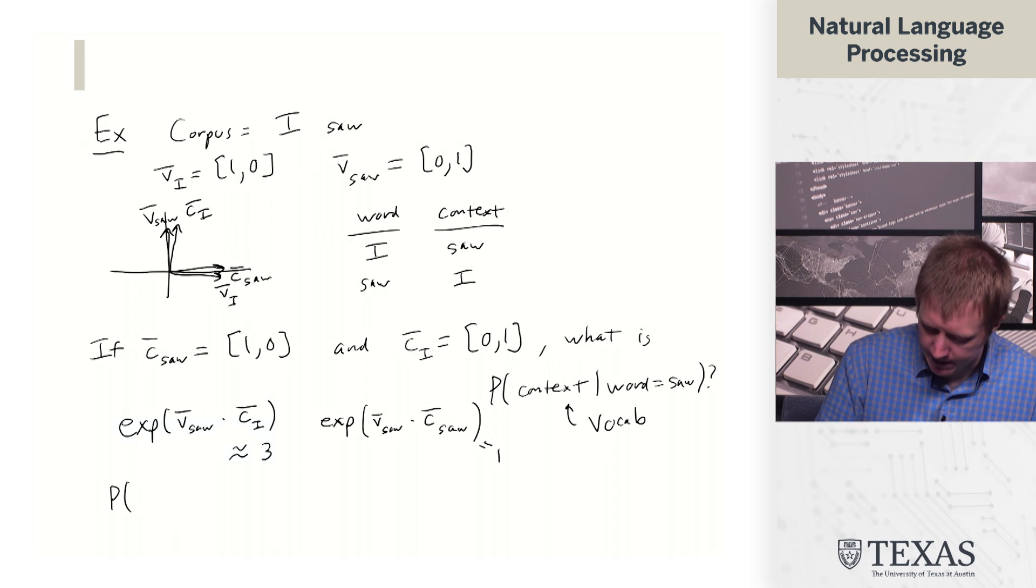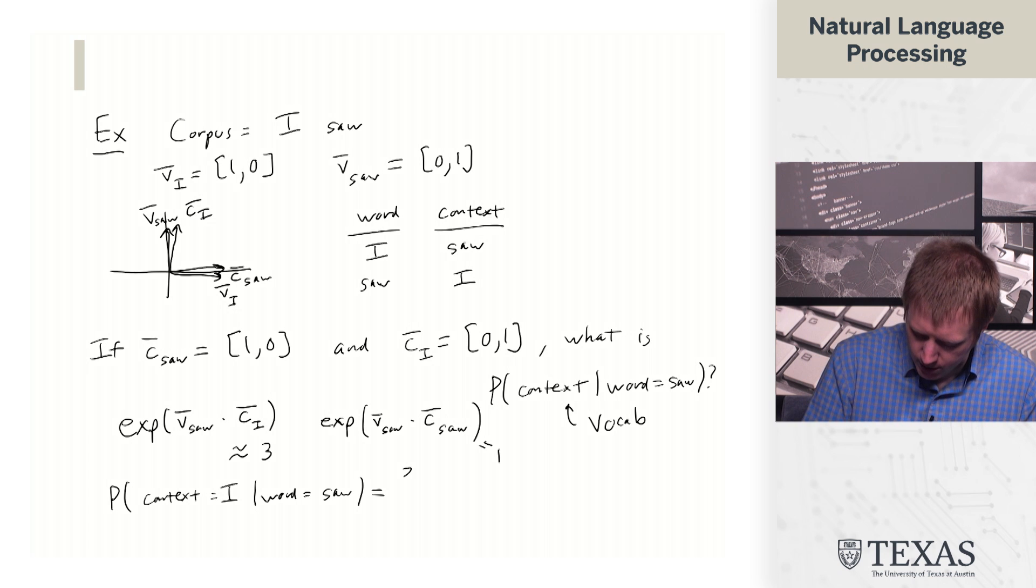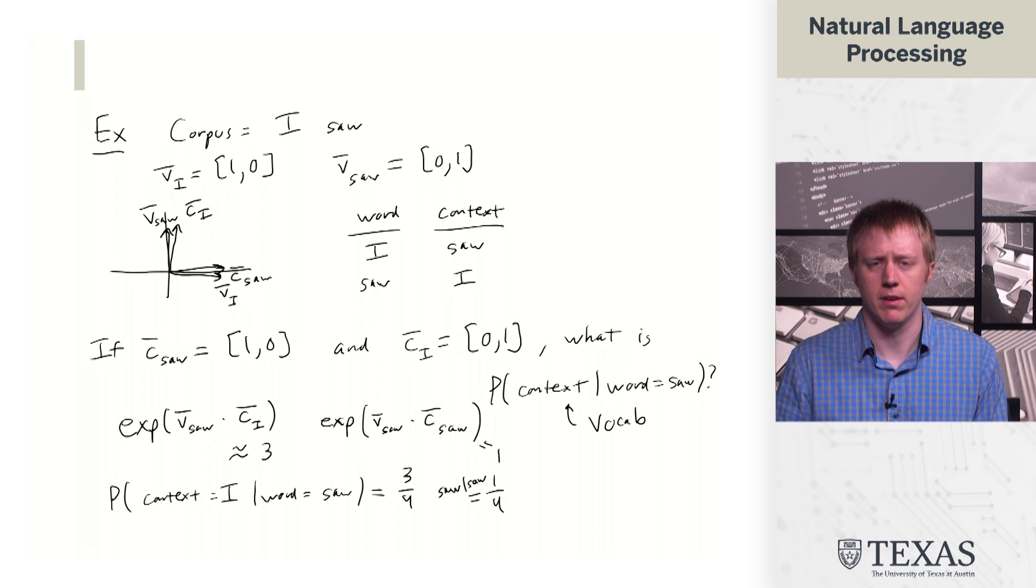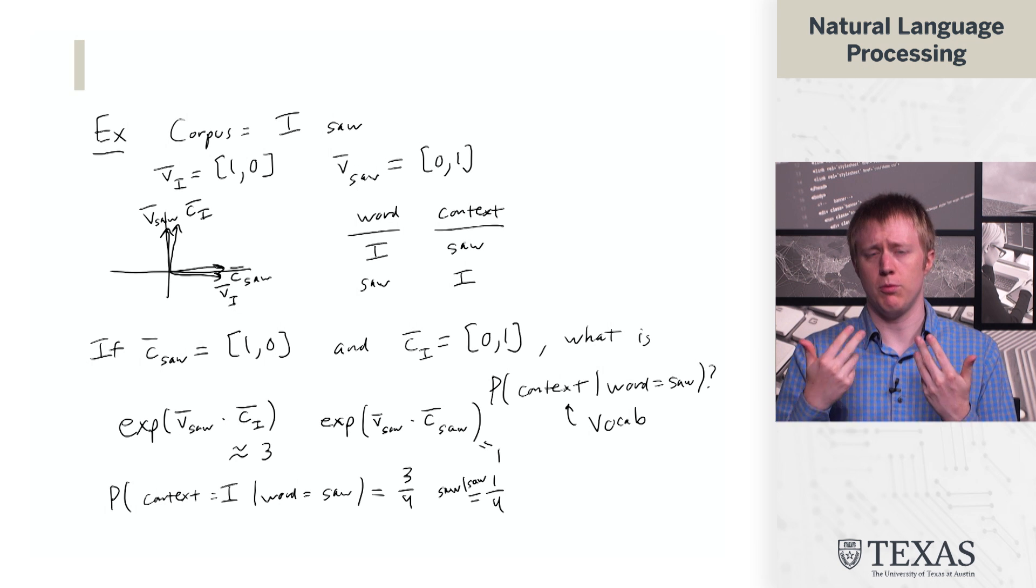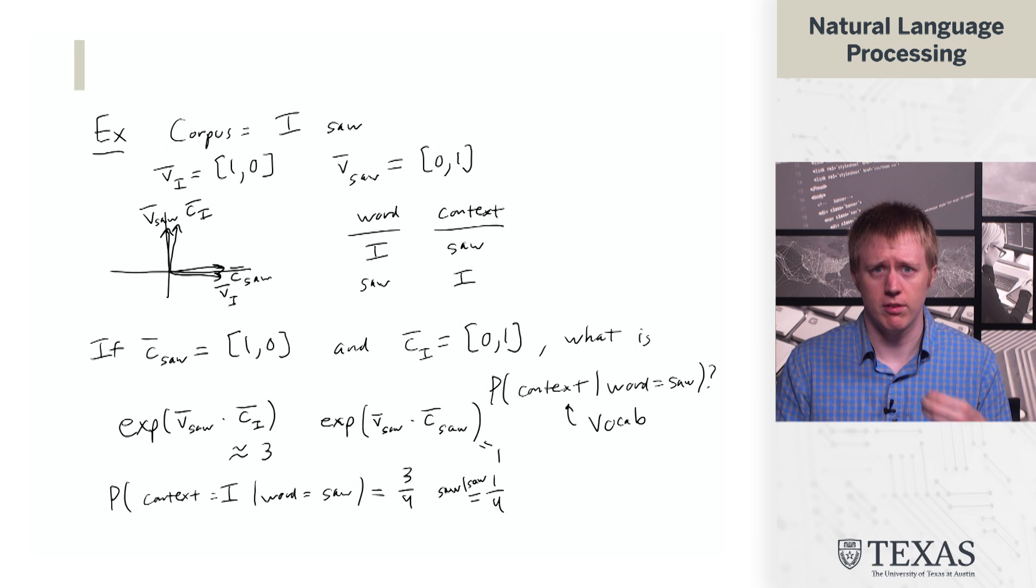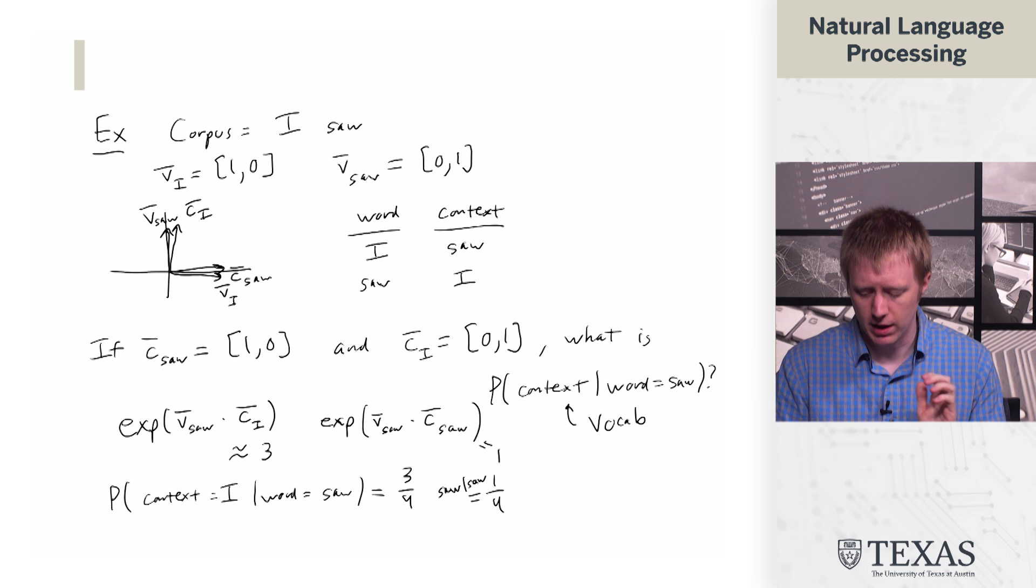So in this case, p of context equals i given word equals saw is 3 fourths. And then for saw given saw, it's going to be 1 fourth. So this is kind of nice in that it can sort of, we've set up these word and context vectors and it kind of confirms our intuition about how this should behave. We should have saw be more likely, or yeah, i more likely to happen given saw than the other way around.